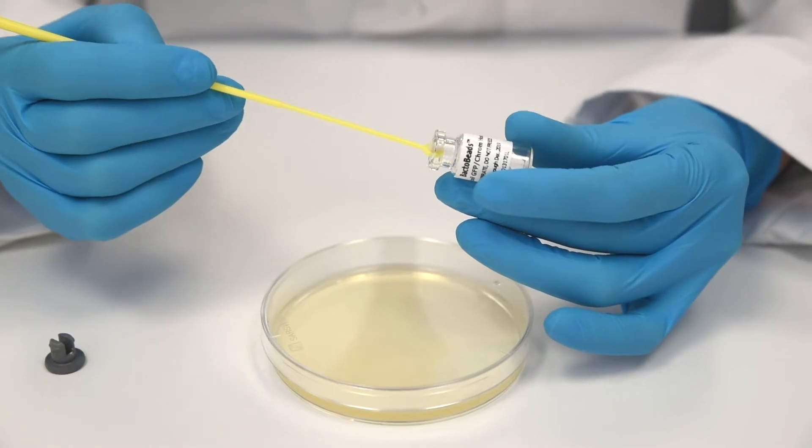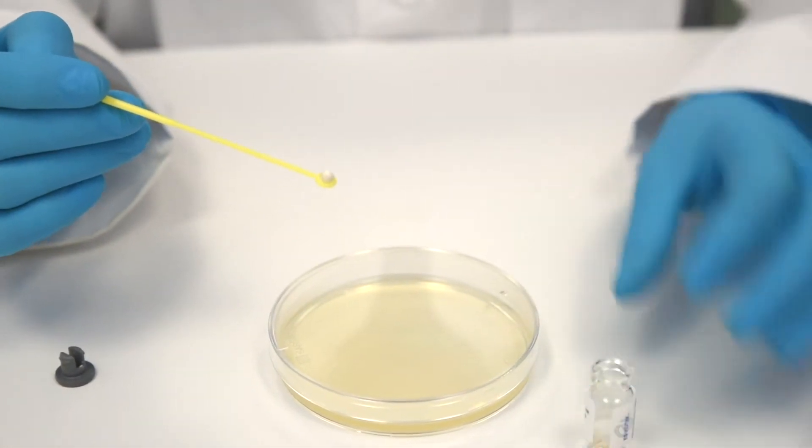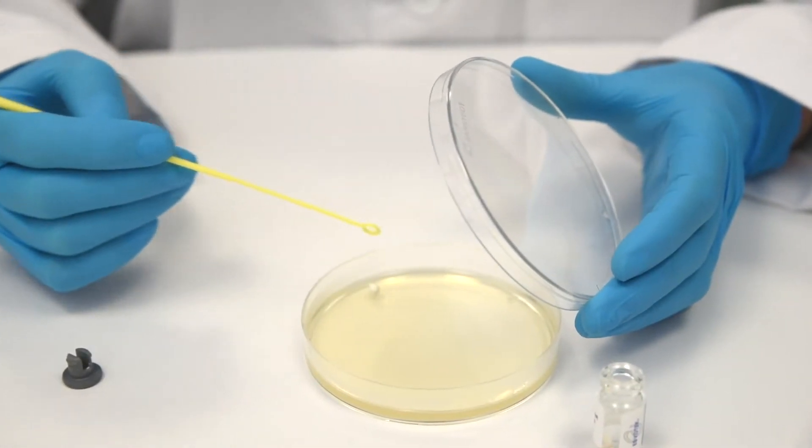Step 8: Repeat the above steps for each of the remaining LB source plates using a new loop for each plate.